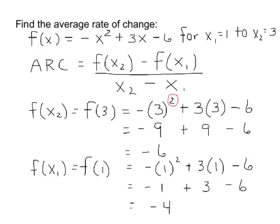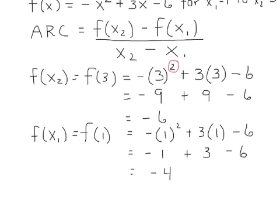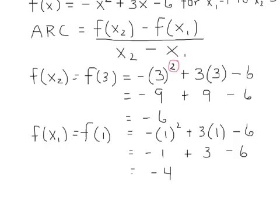So now we're ready to put this all together. Our f of x₂ is negative 6. Our f of x₁ is negative 4. And average rate of change equals our f of x₂, which is negative 6, minus f of x₁, a negative 4.